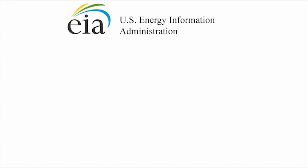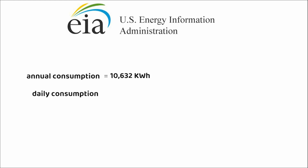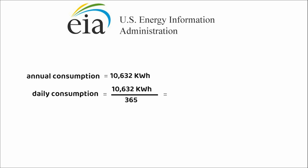According to the US Energy Information Administration, the average US household in 2021 used 10,632 kilowatt hours of electricity per year. That's equal to 886 kilowatt hours per month or 30 kilowatt hours per day.